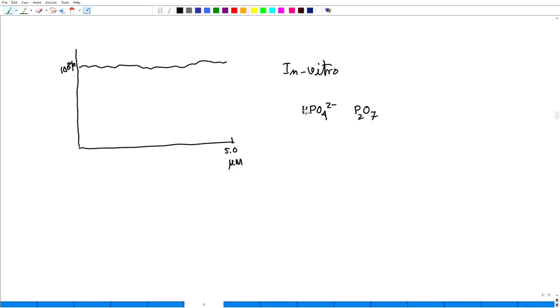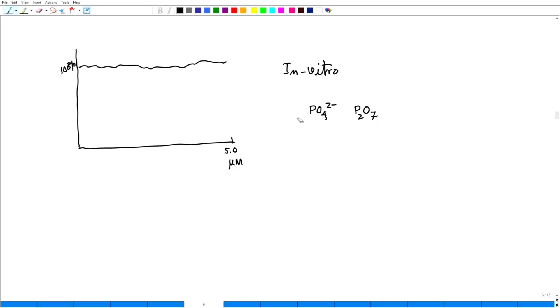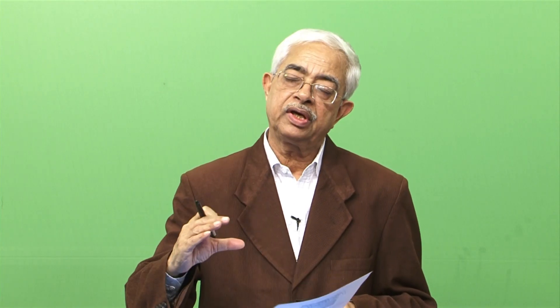By looking at how much PO4³⁻ and how much P2O7 are present, we can find them by fluorescence methods. For that, we need a specific receptor.